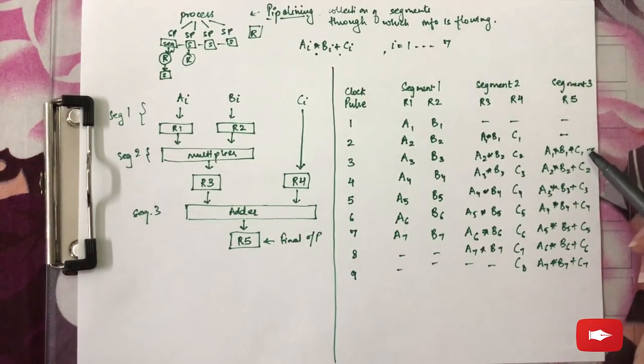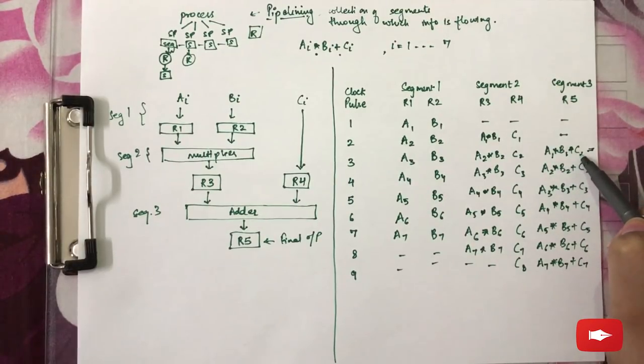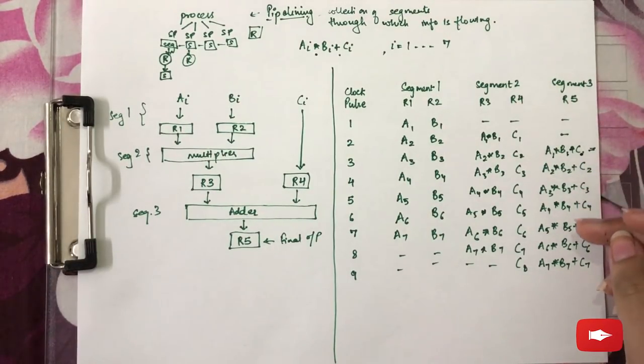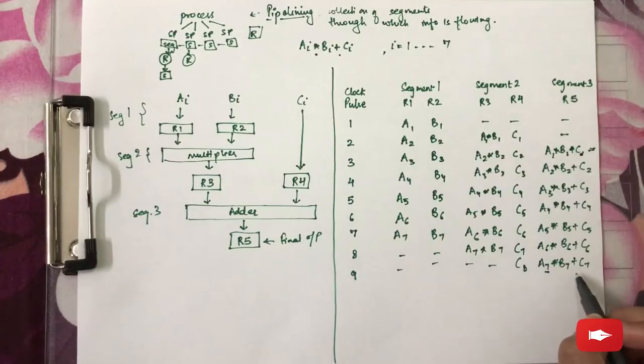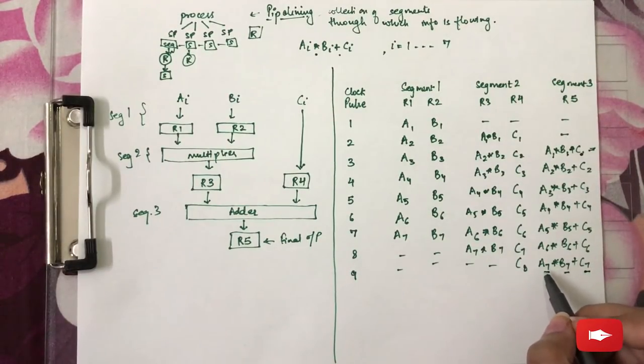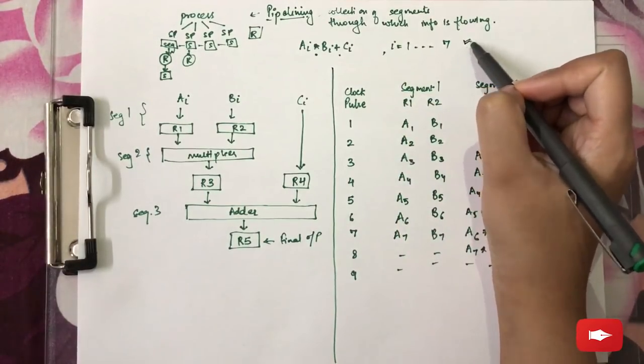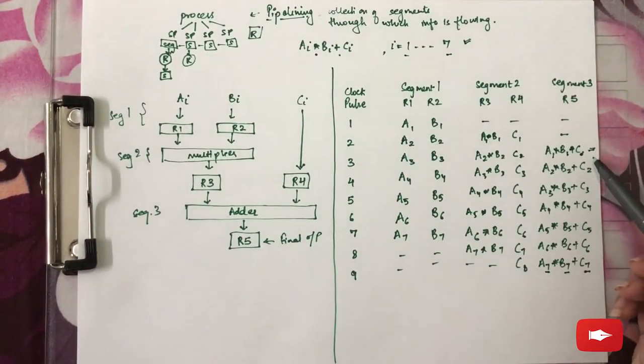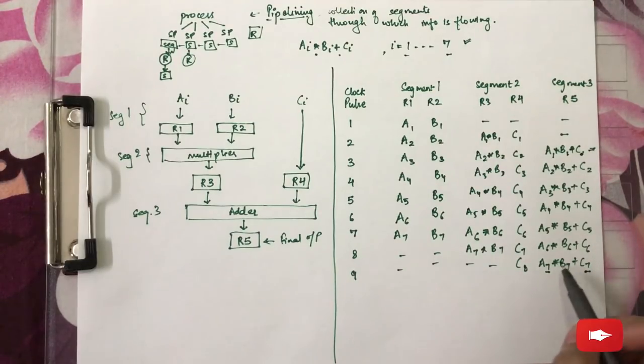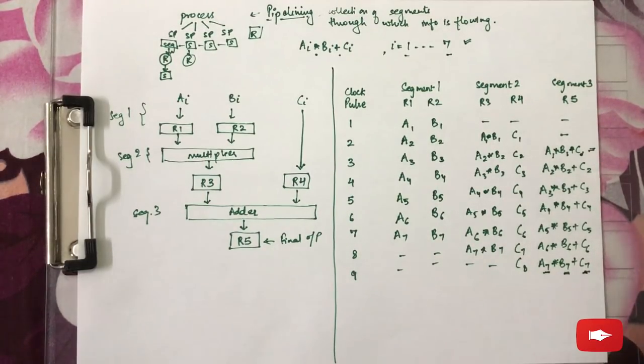Now, as we get the final output for the first bit, this process will go on until we get the same final result for all the bits. Because we assumed i to be from 1 to 7.